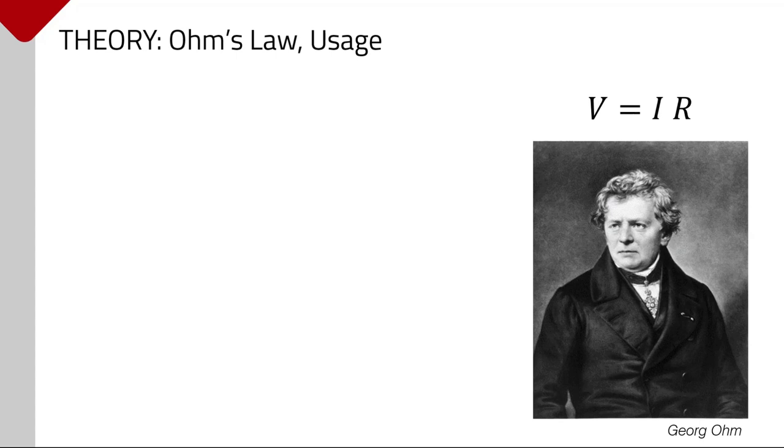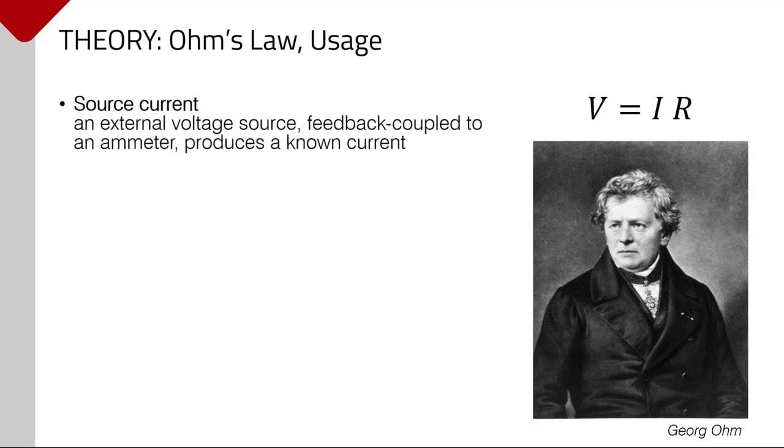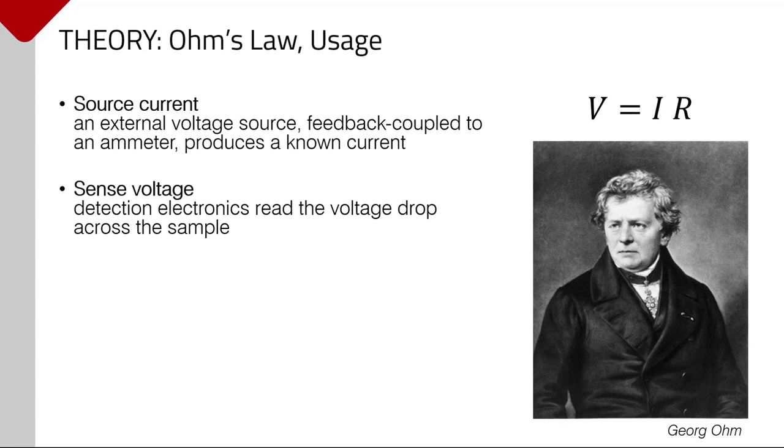For metals, this linear relation between current flow and the associated potential difference usually holds true. To determine the resistance of an uncharacterized material, the strategy typically goes as follows. First, a known current is supplied to the sample. In practice, this usually ends up being a voltage source feedback coupled to an ammeter. Next, a voltmeter of some sort is used to quantify the potential drop along the direction of current flow. Now, with V and I known, it's trivial to solve for R.